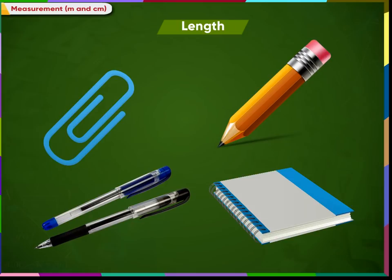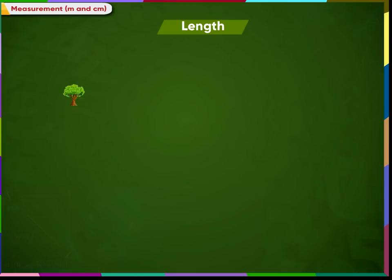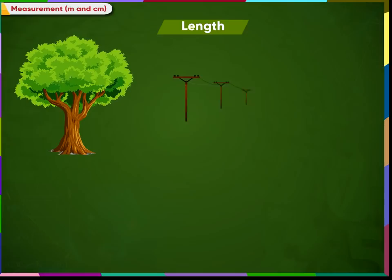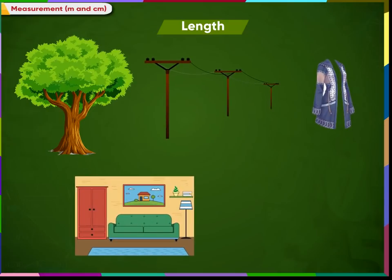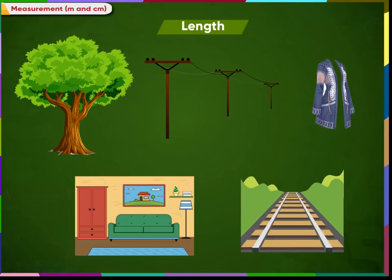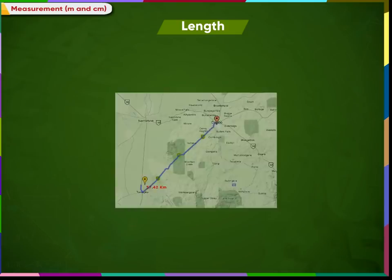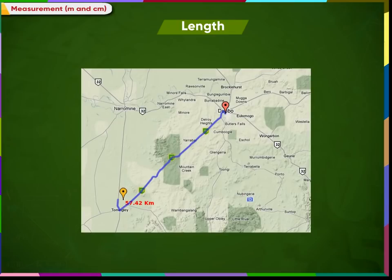Some are long in length, such as a tree, electric pole, cloth, length of a room, railway track. And some are very long, such as the distance between two cities.